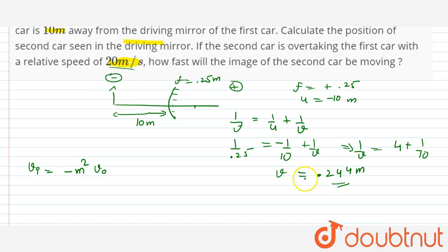Now we have to find out the magnification. The magnification is minus V upon U. So V is minus 0.244. Sorry, this is plus. U is minus 10 upon minus 10. So this is the magnification.